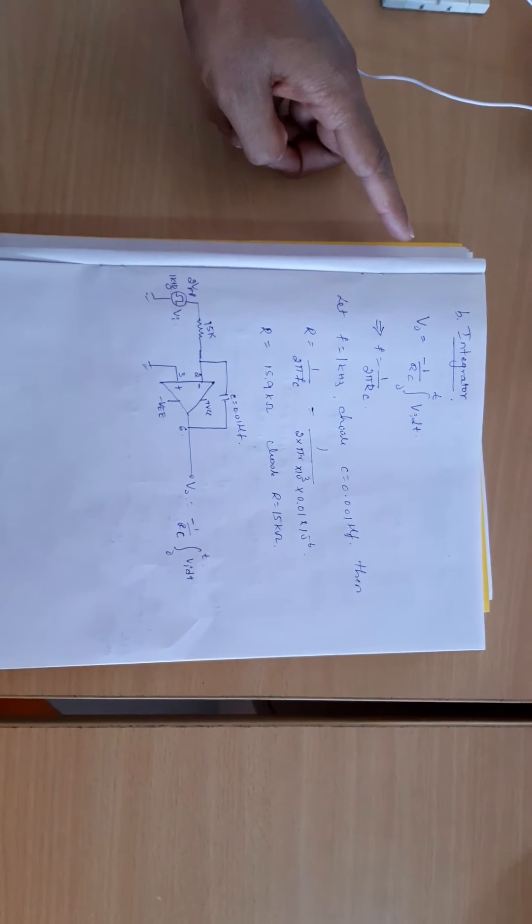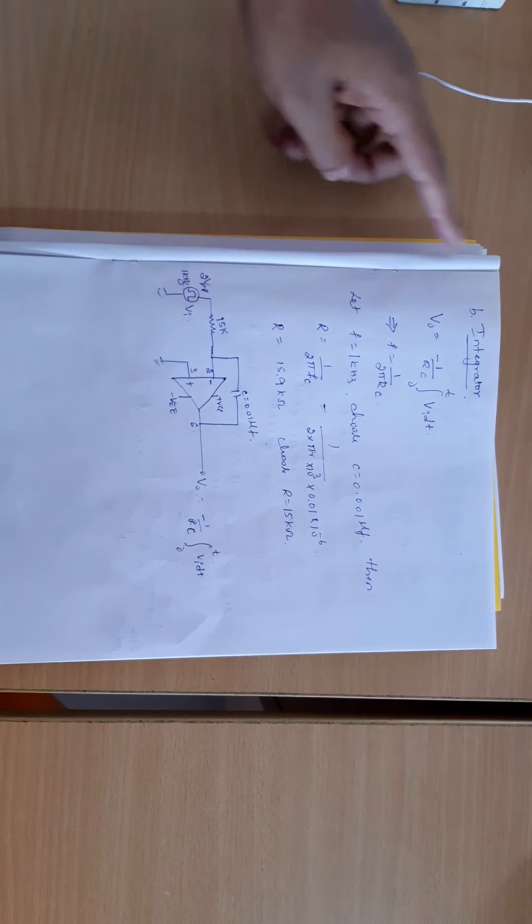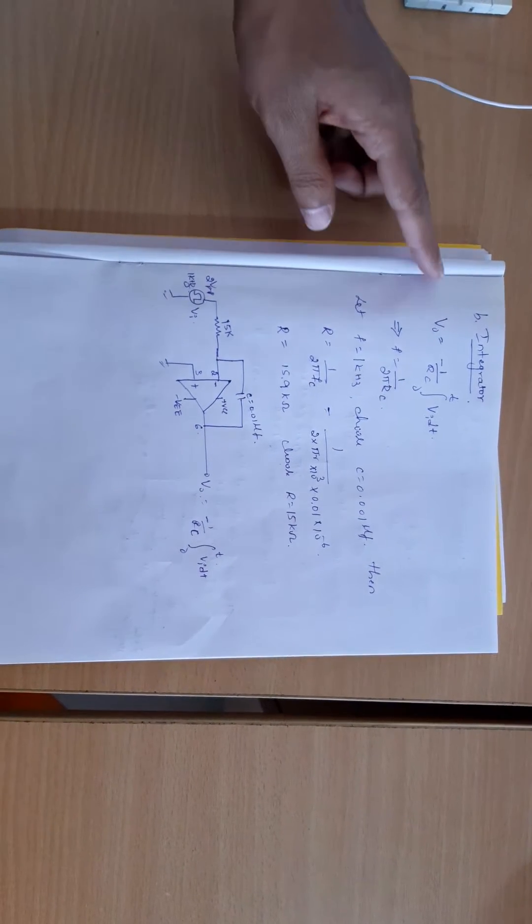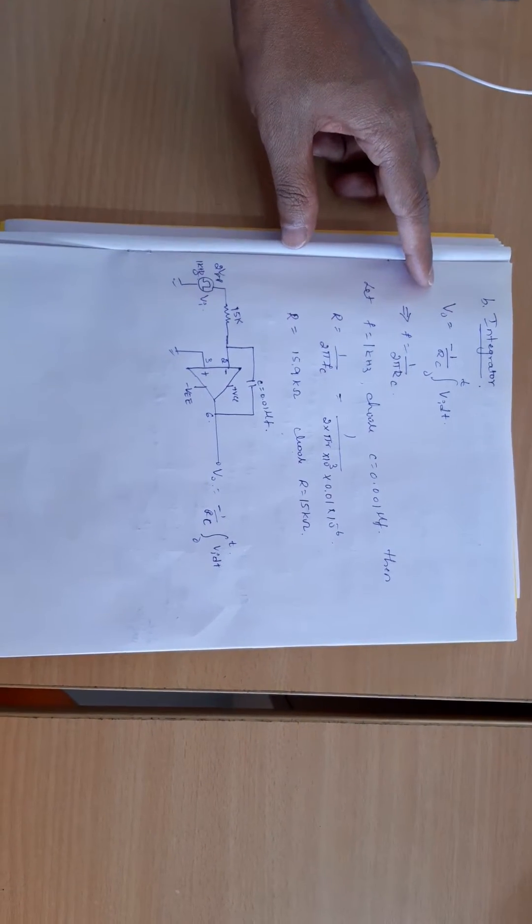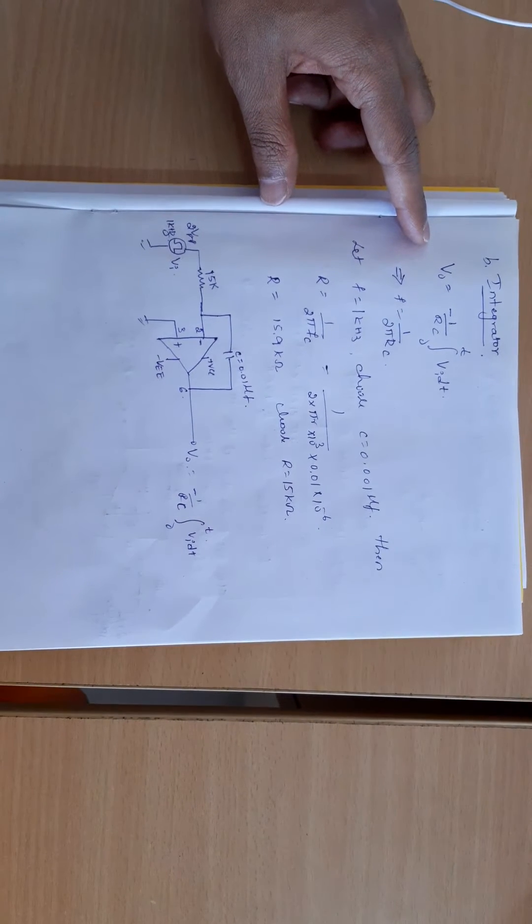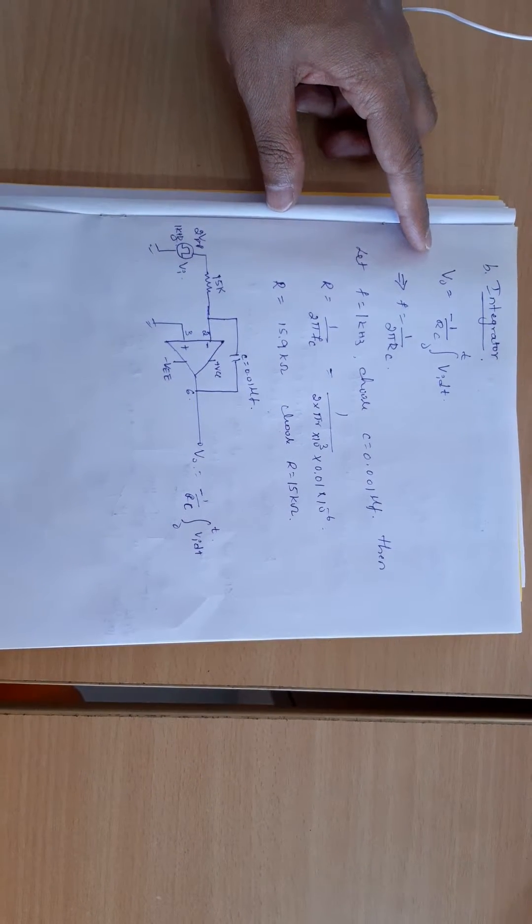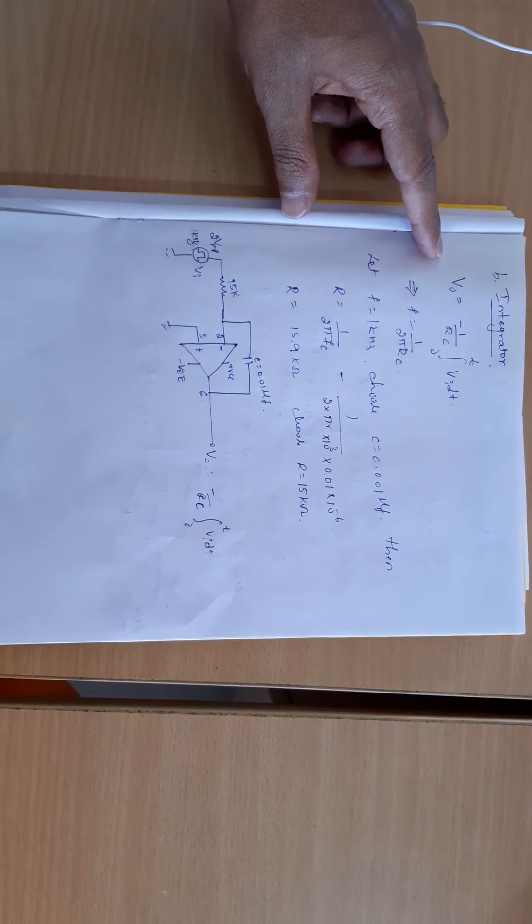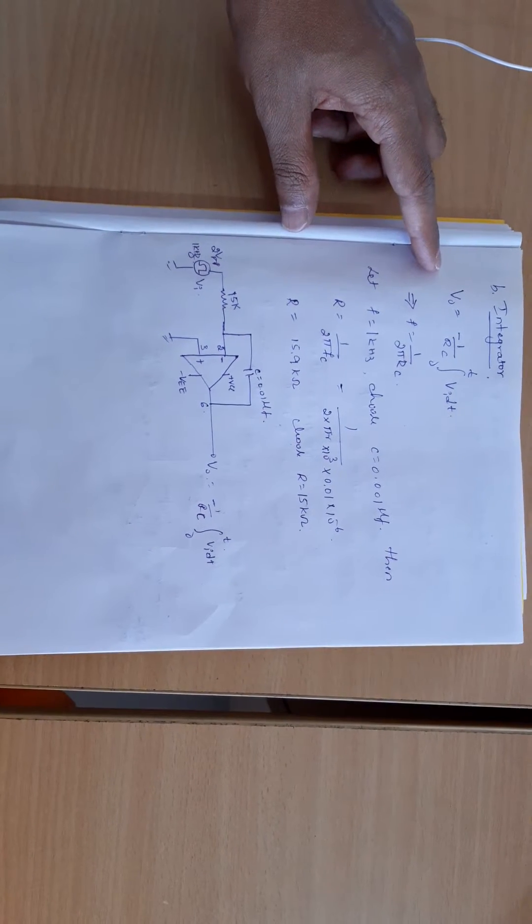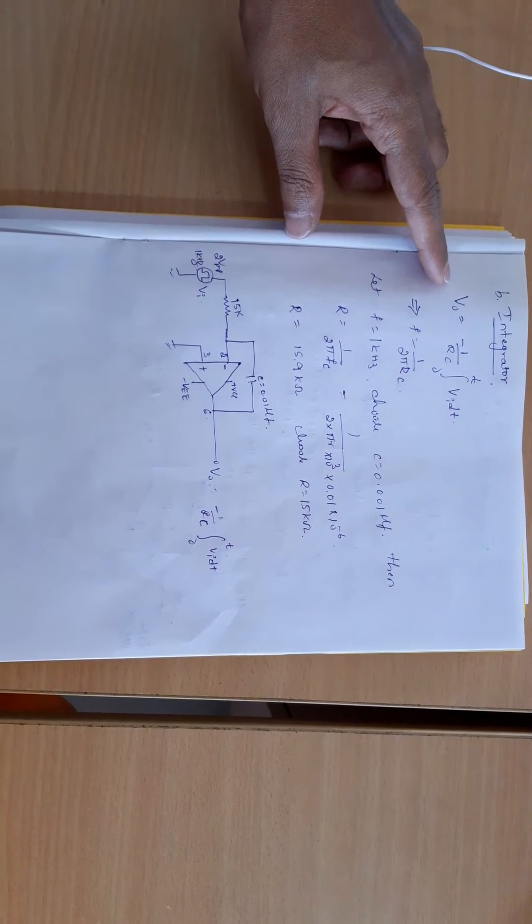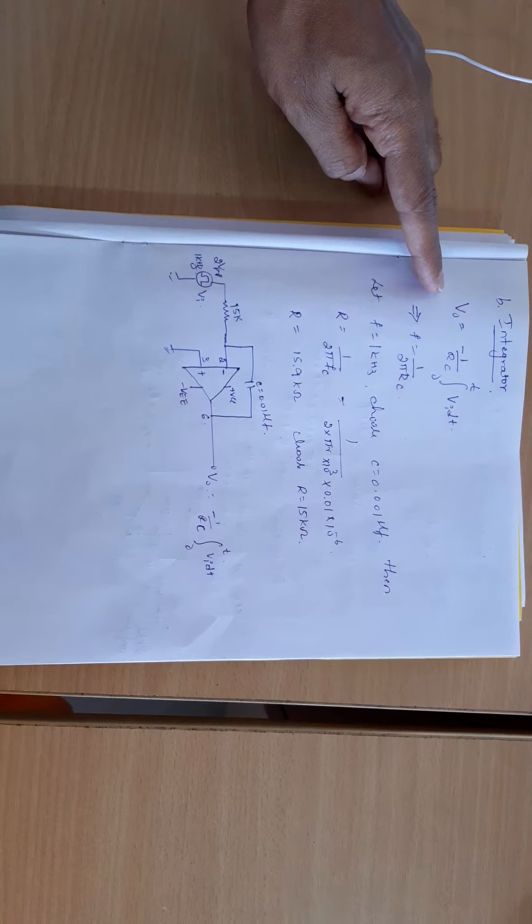As part of the first experiment, we will now go to the second subsection: the integrator. The integrator has the standard formula v0 equals minus 1 by RC integration from 0 to t, vi dt. Here vi is input, v0 is output, and R and C values we will be varying to get different output voltages.